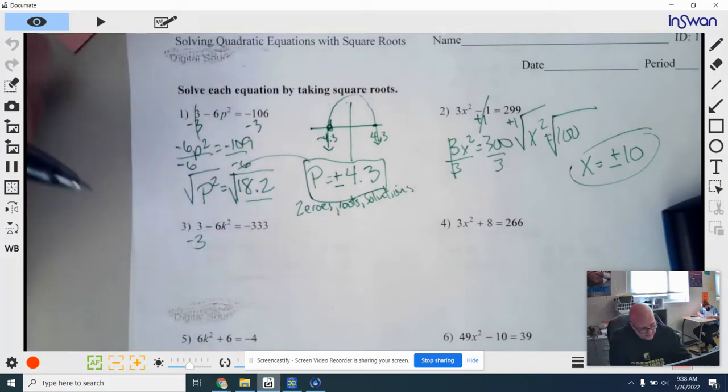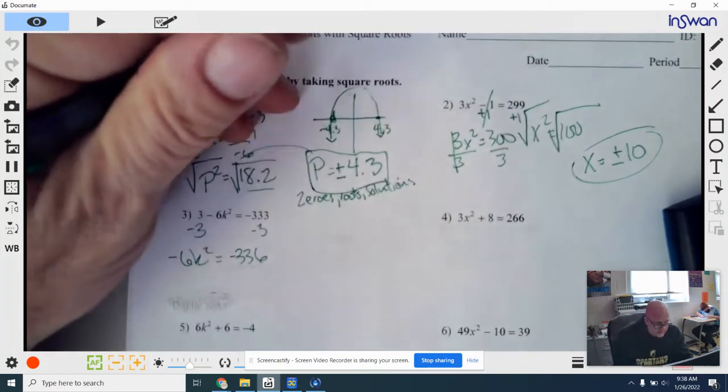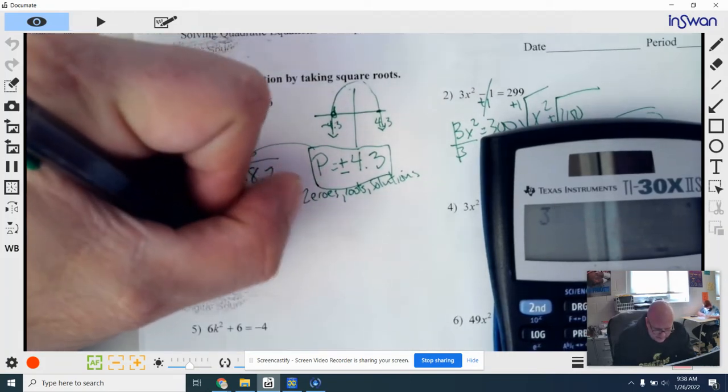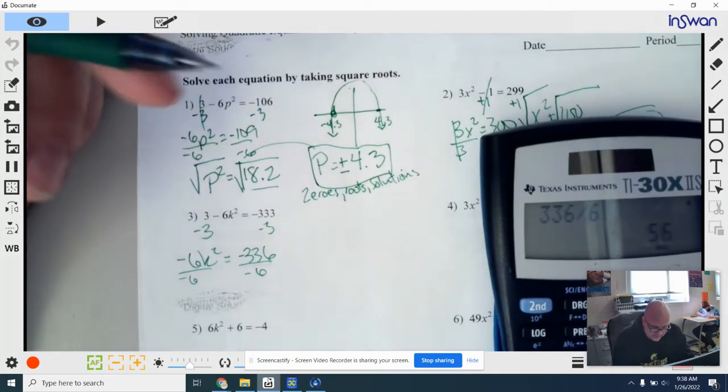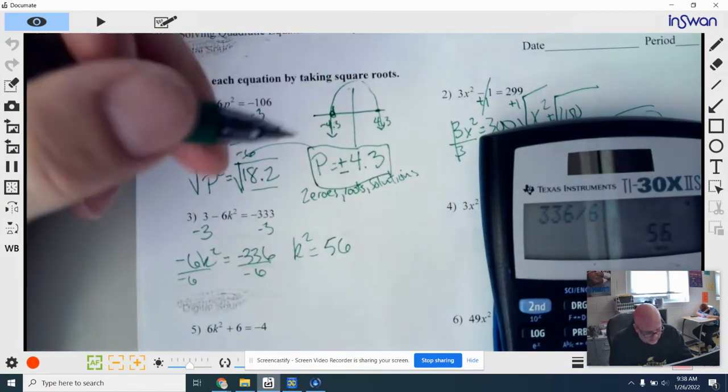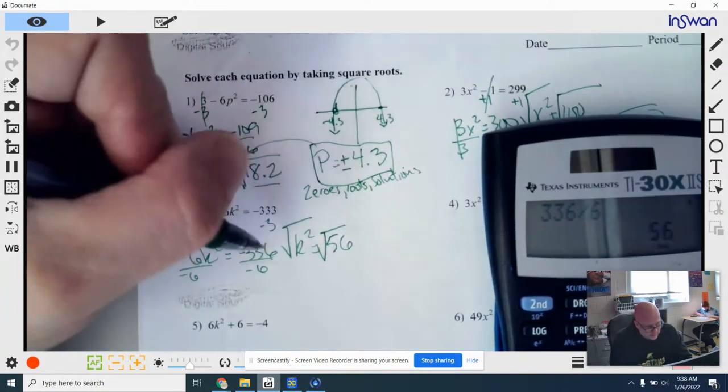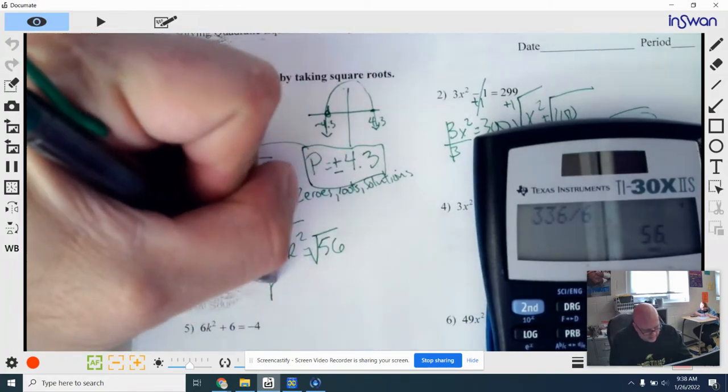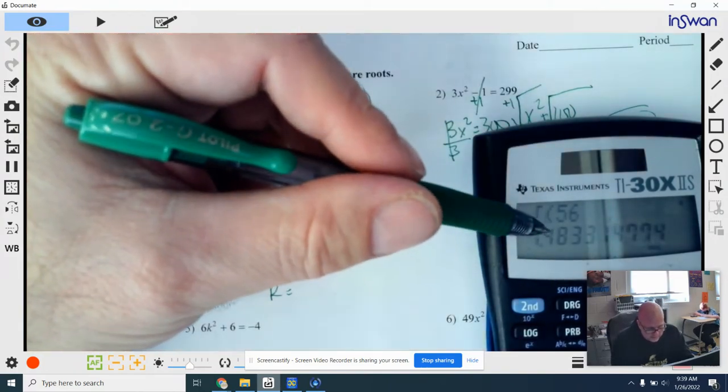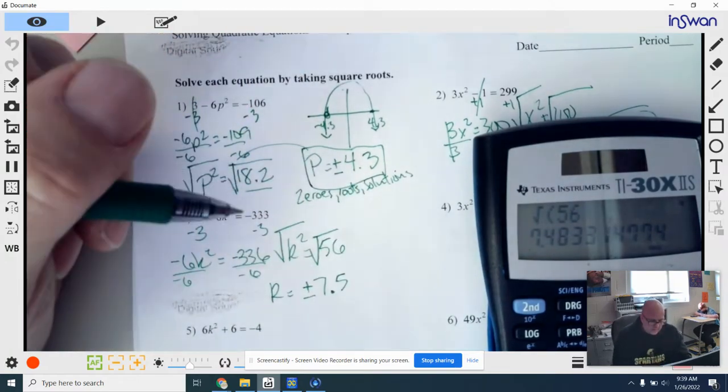Number 3. So I would subtract 3 to both sides. Negative 6k squared equals negative 336. So if I take divided by negative 6 now, so 336 divided by 6, I know my answer is positive. So I get k squared is equal to 56. I know this is not going to be a perfect square, so I'm going to get a decimal answer when I take the square root of the left side and the right side. So I get k equals, and the square root of 56 rounded to the nearest tenth. So I'd round that off to about 7.5. Don't forget, it's plus or minus. You've got to have your two answers there. Plus or minus 7.5.